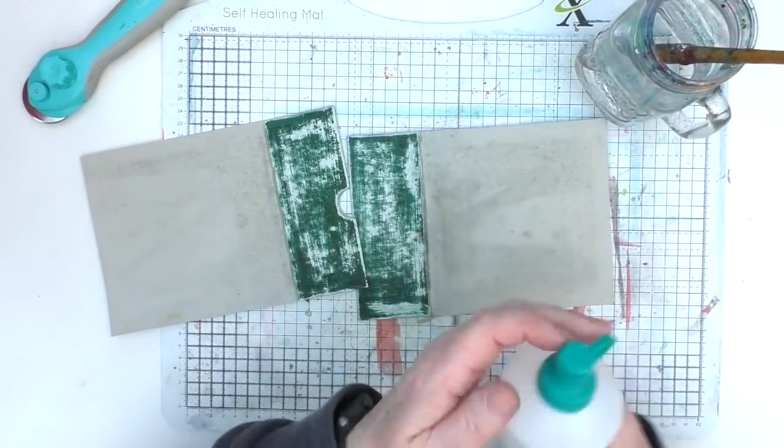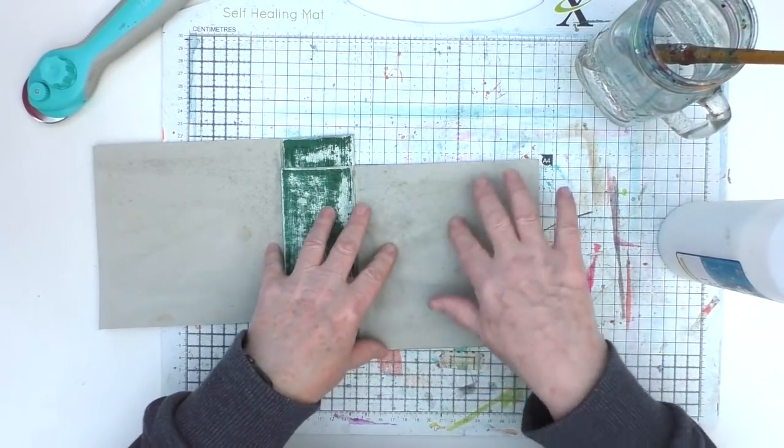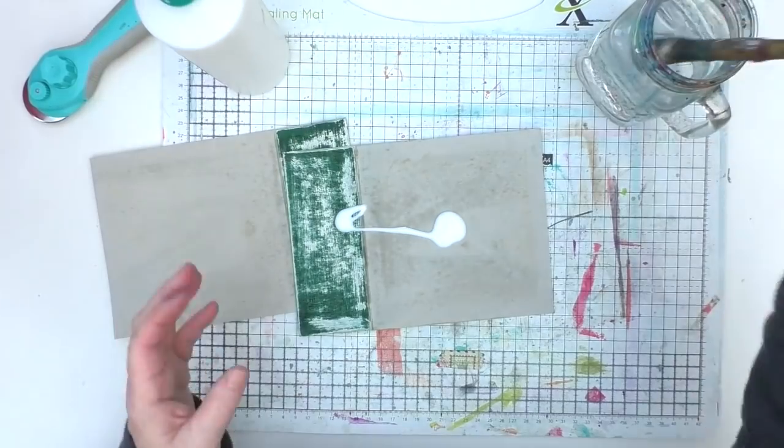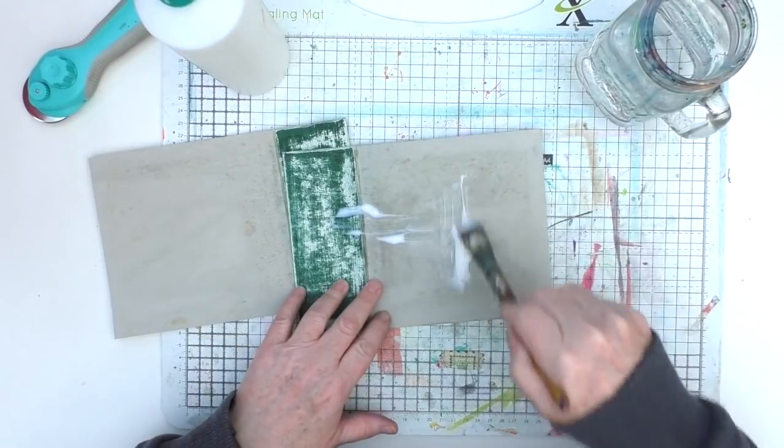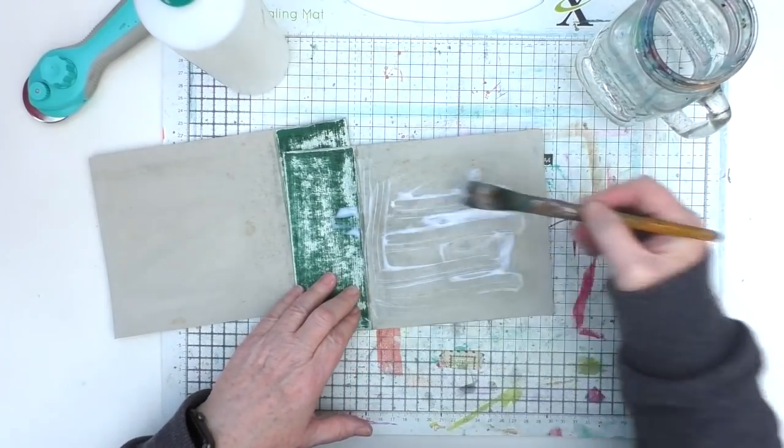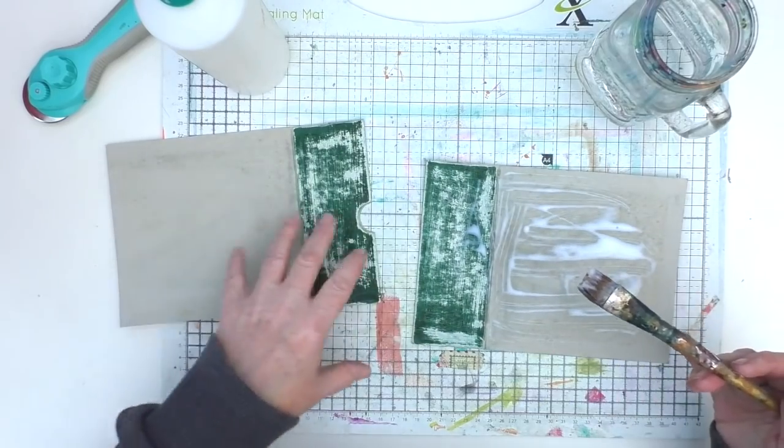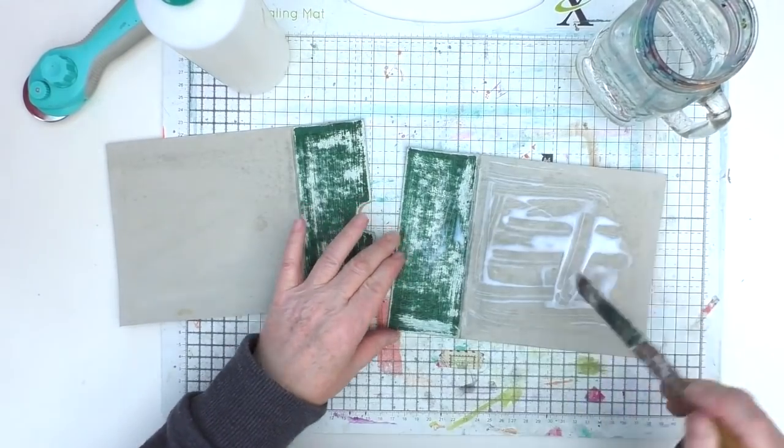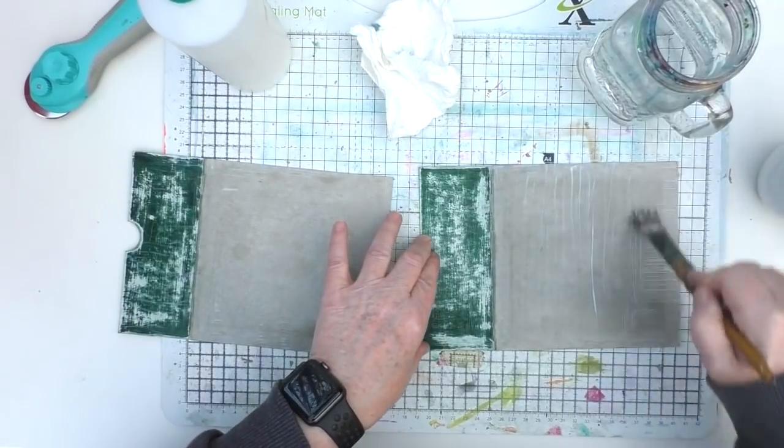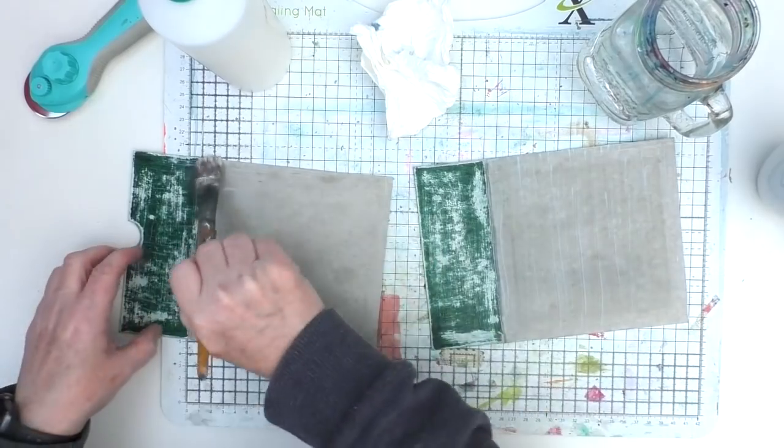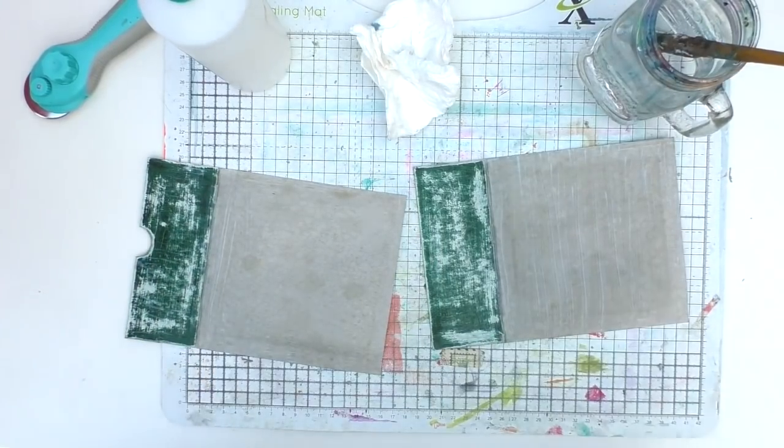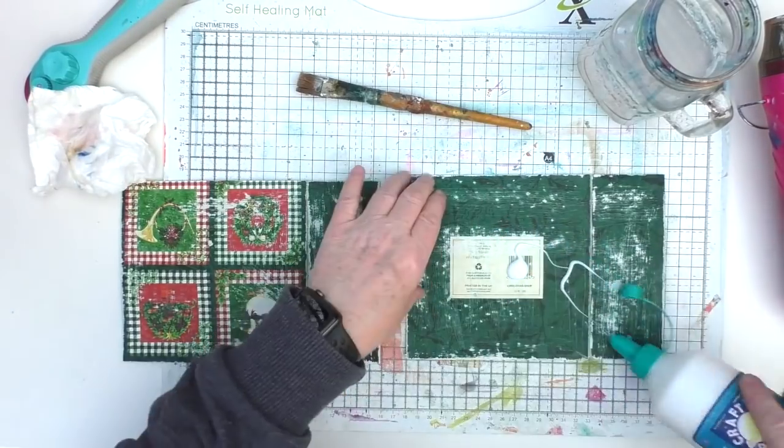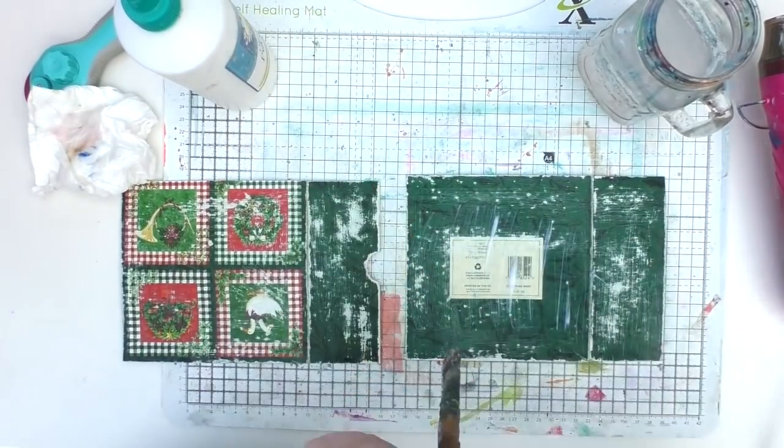I'm using a biodegradable wipe to mop up the sandings. I quite like that pattern there, nice and grungy looking. Now I want to seal my cardboard. I've noticed when making journals in the past that if I glue directly onto cardboard, sometimes it absorbs the glue and whatever I stick down doesn't stick as well. This isn't essential, it's just something I like to do. I'm giving each side a coat with PVA glue to seal it.